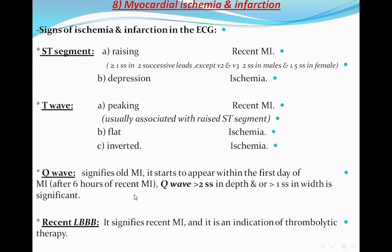Recent left bundle branch block signifies recent MI and is an indication for thrombolytic therapy or primary PCI — of course if associated with chest pain. So in summary, the signs are: ST segment elevation or depression, T wave peaking, flat, or inverted, Q waves, and new left bundle branch block.